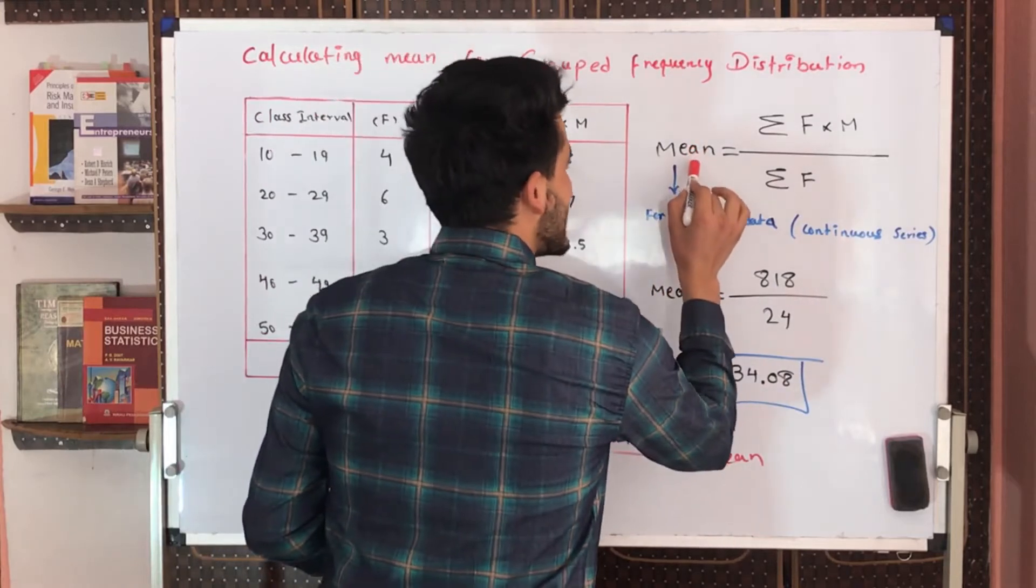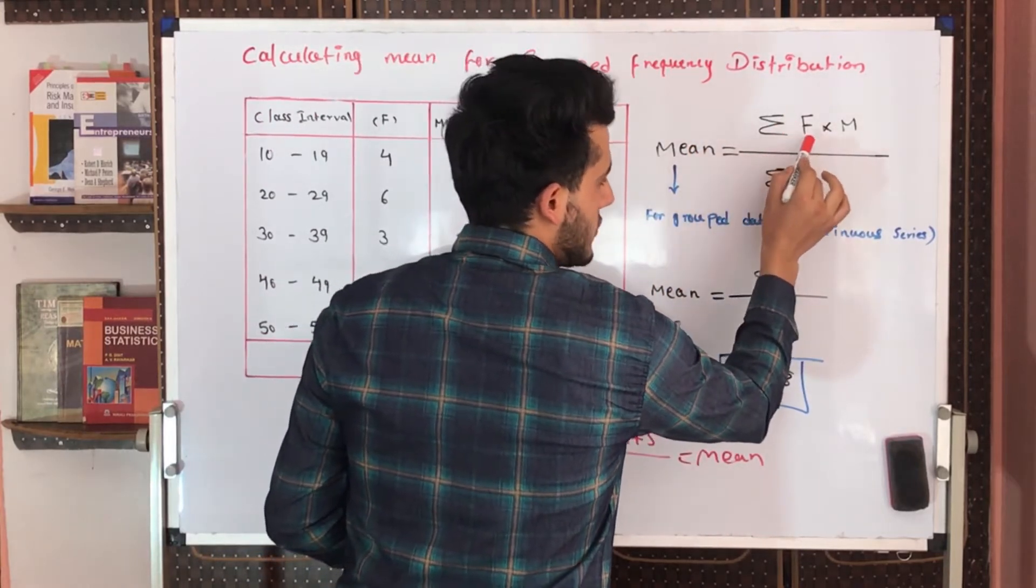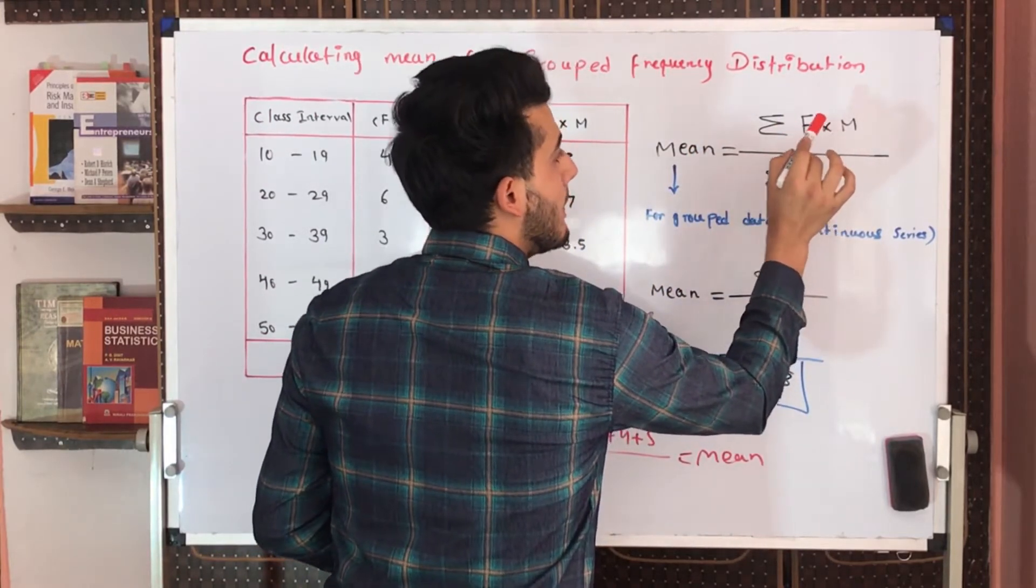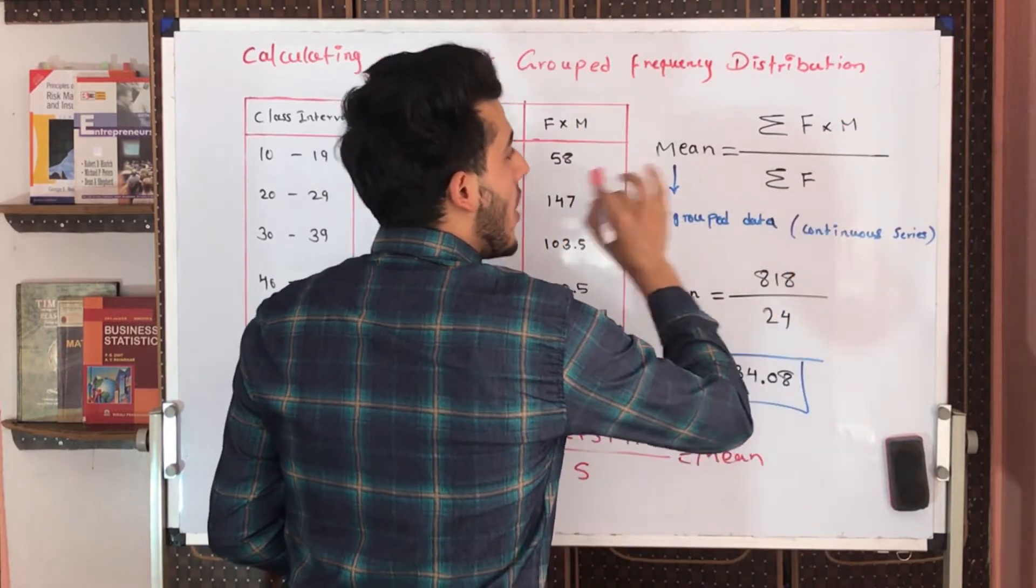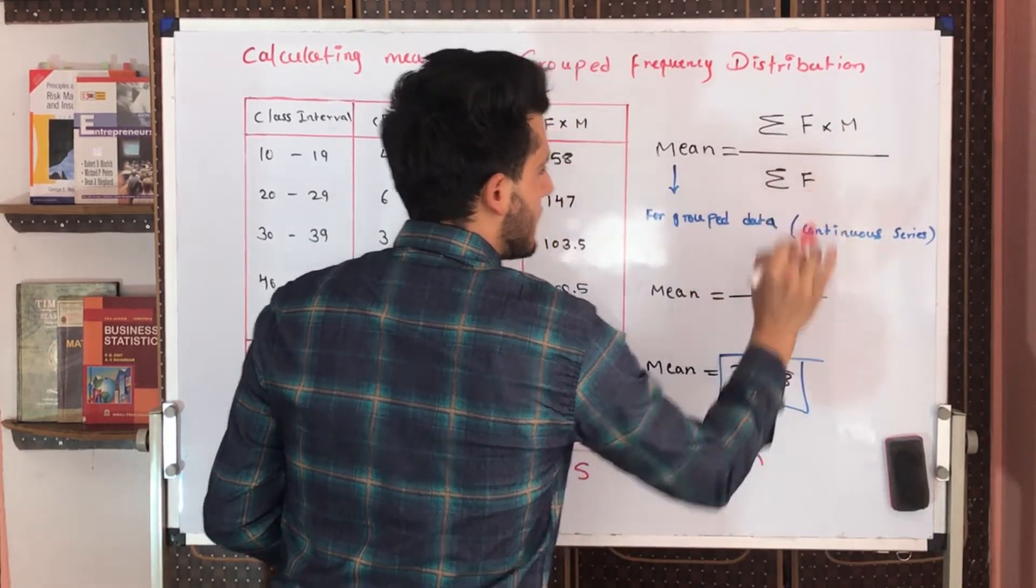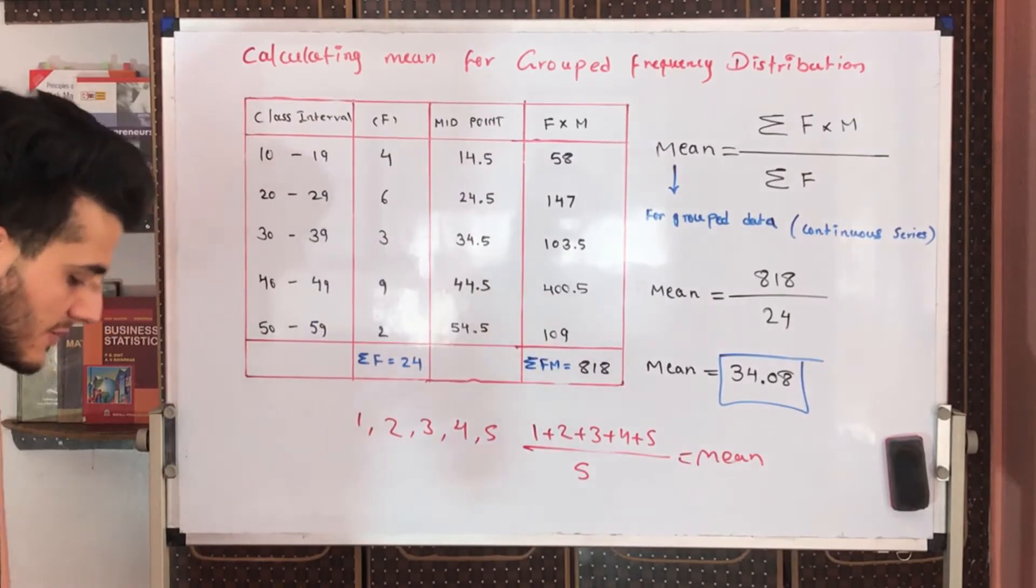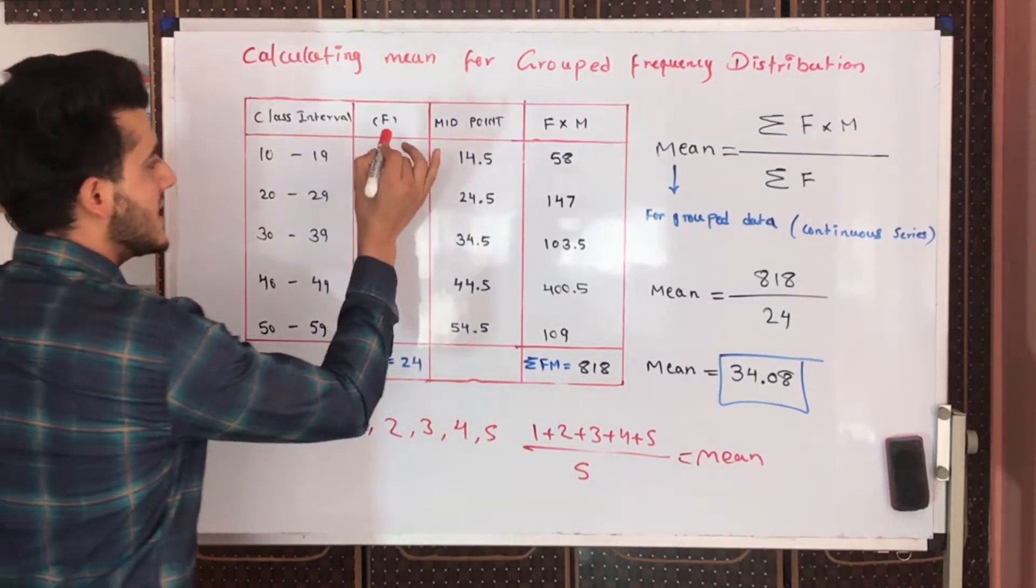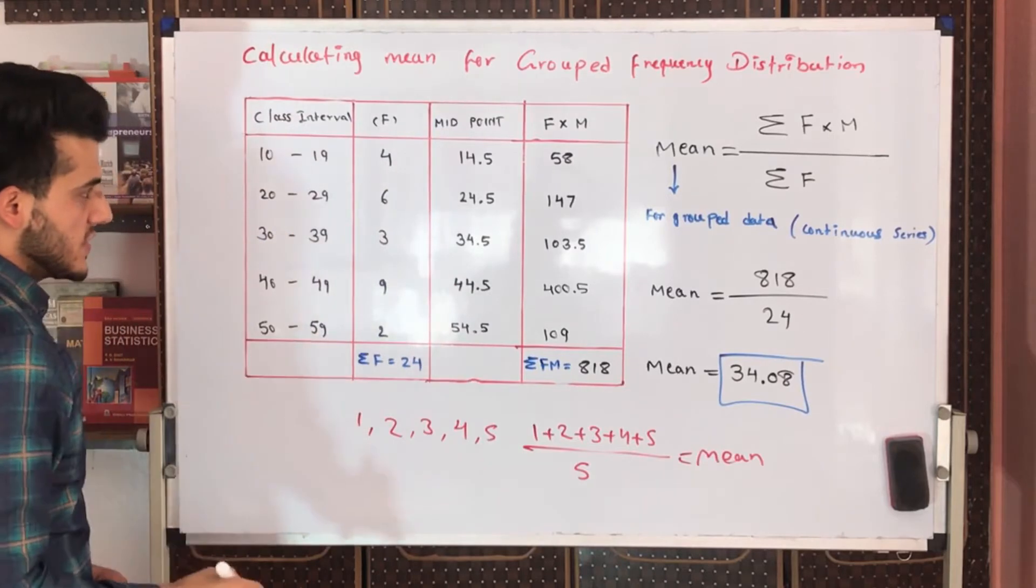Here we have a formula: mean is equal to summation of frequency multiplied by midpoint, all of them divided by summation of frequency. If we find summation of frequency, we take the accumulation of all these frequencies: 4 plus 6 plus 3 plus 9 plus 2, and the result is 24.